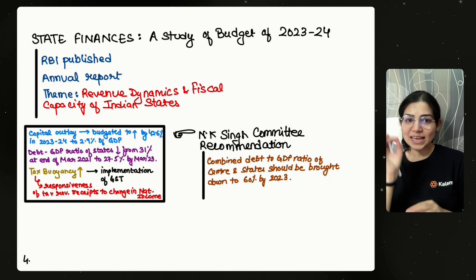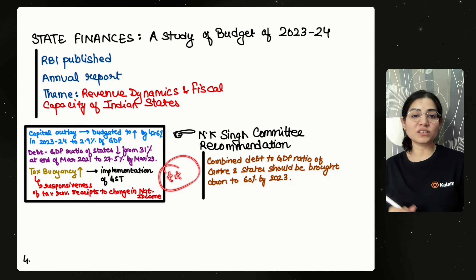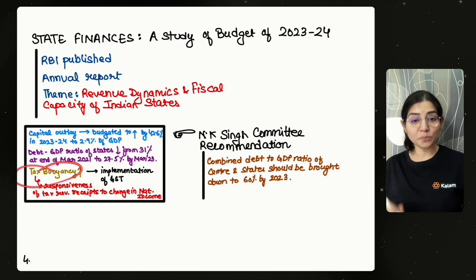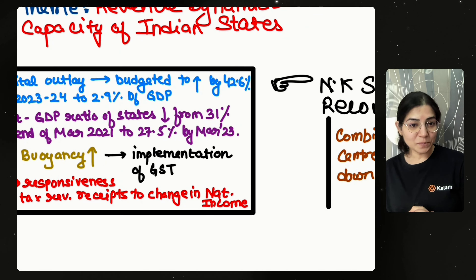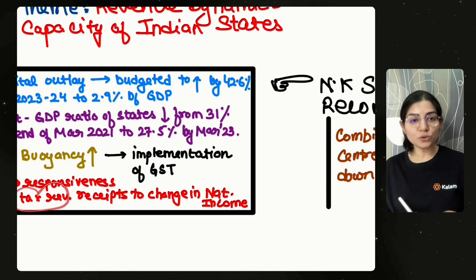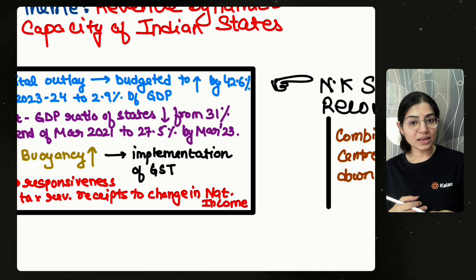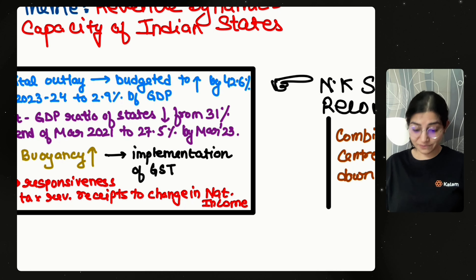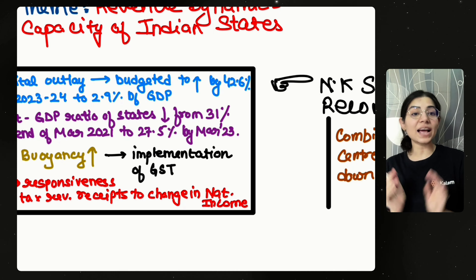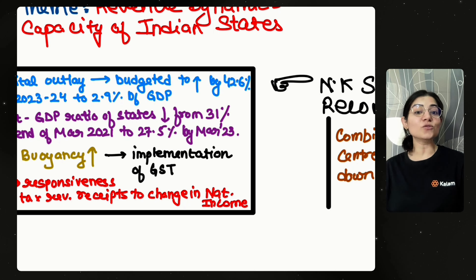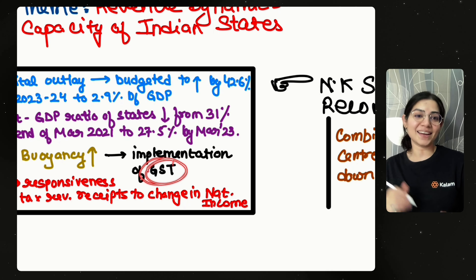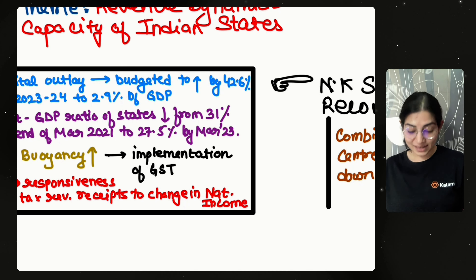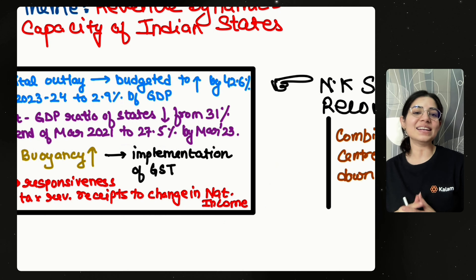One positive finding from this report is that tax buoyancy has increased. Tax buoyancy refers to the responsiveness of tax revenue receipts to changes in national income or GDP — how much our tax revenue receipt has increased or decreased relative to changes in GDP. Since the implementation of GST, tax revenue receipts have increased, which reflects improved tax buoyancy. This is an important concept to understand when studying Indian economy.